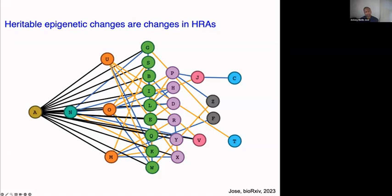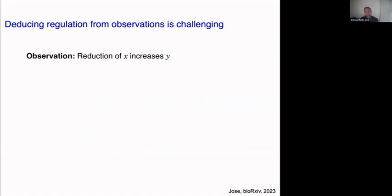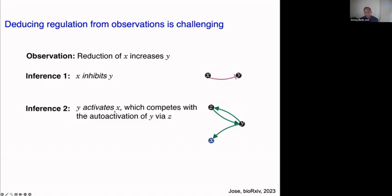This complicated picture underlies the frequency with which different architectures appear in nature. We can't really understand what's going on until we perturb the system and infer from observations — and we can be misled easily. For example, if you reduce X and see an increase in Y, the easy inference is that X inhibits Y. But an alternative is that Y actually activates X, which competes with the auto-activation of Y via Z. Distinguishing these requires more experiments.